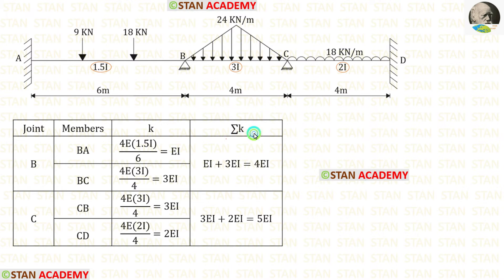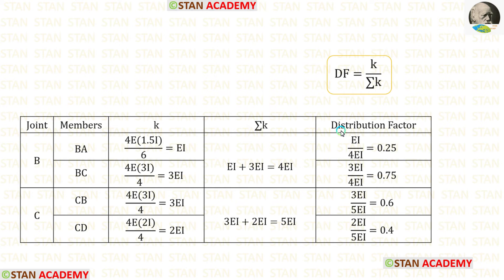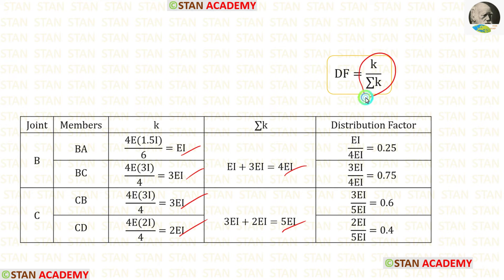Now let us find ΣK. At joint B, adding the two stiffness values gives ΣK = 4EI. At joint C, adding the two stiffness values gives ΣK = 5EI. The distribution factor formula is K upon ΣK. Using the calculated K and ΣK values we can now find all distribution factors.